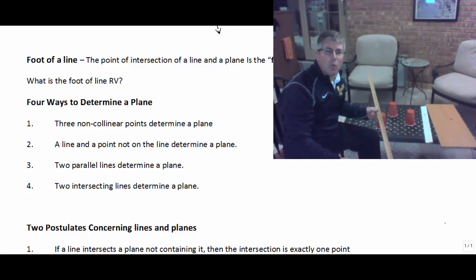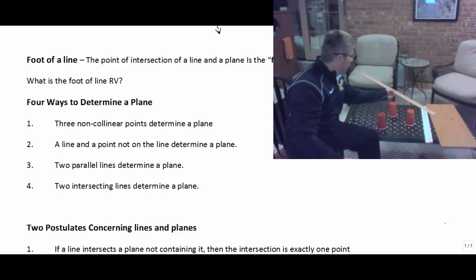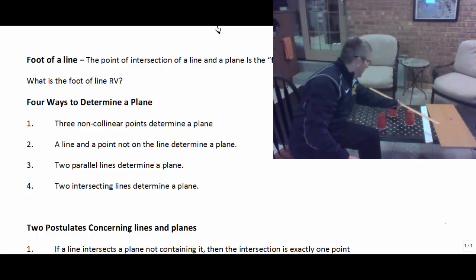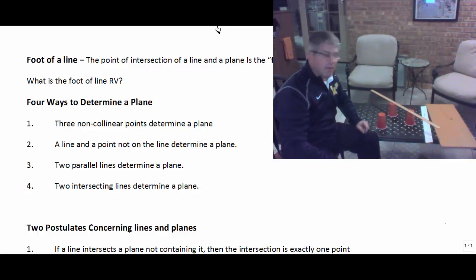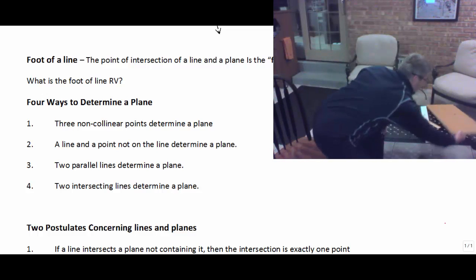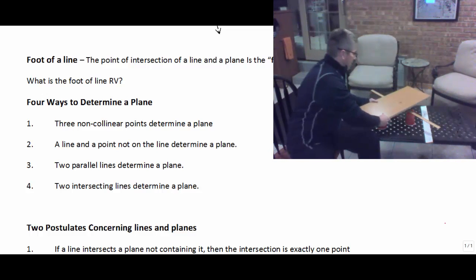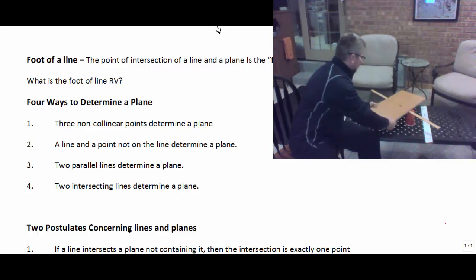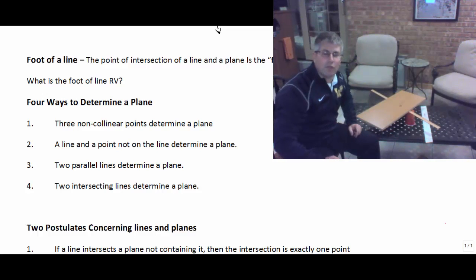As you know, any two points make a line. So we can take two of our points and create a line. Then we have our other point here that's not on the line, and we can set our plane right on there. So that line and that point will determine the plane.